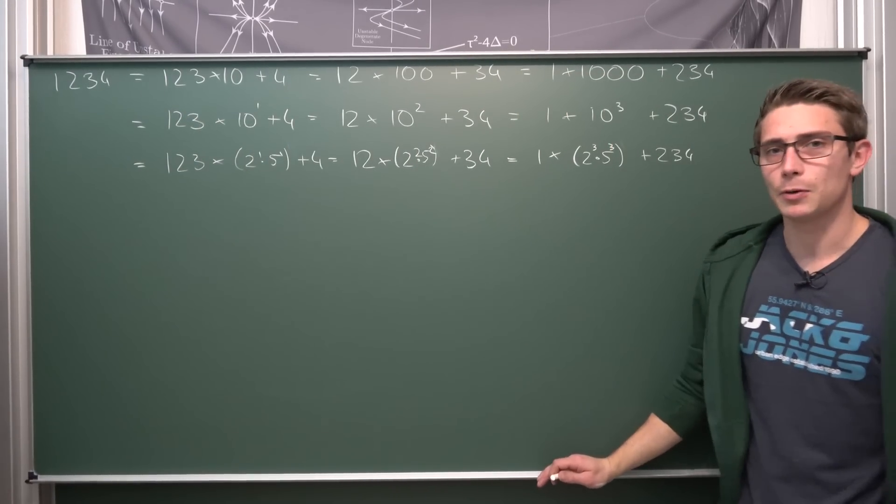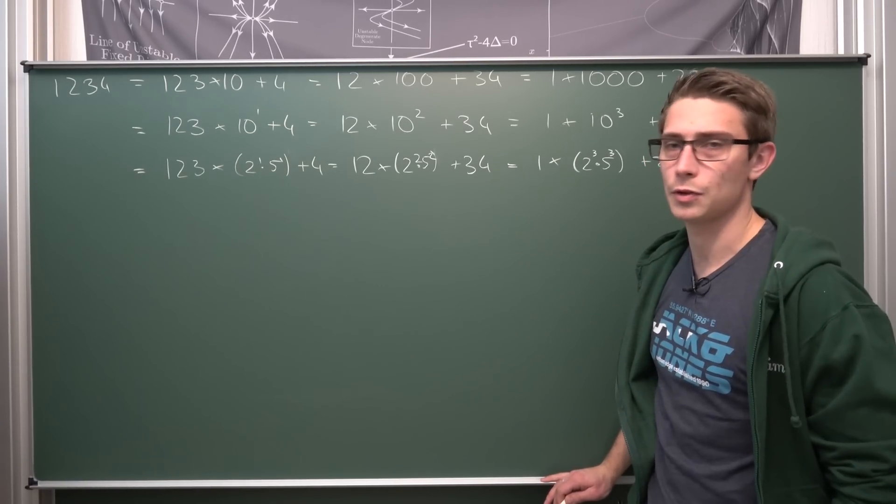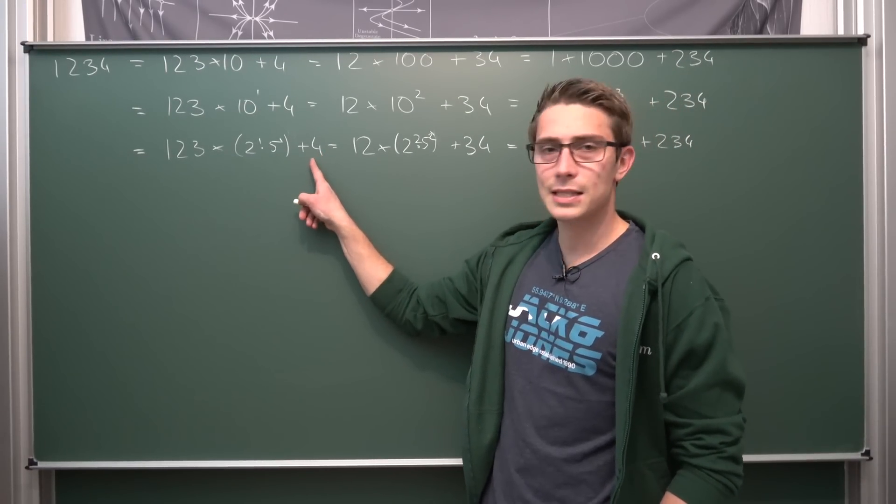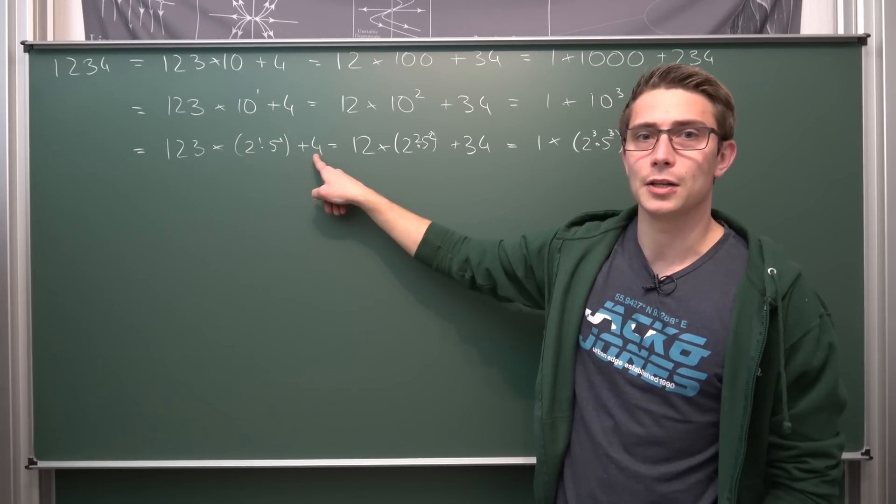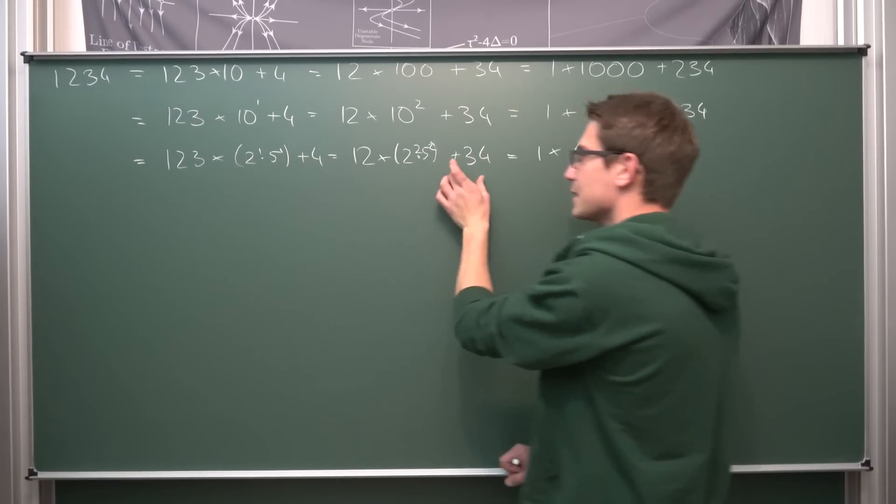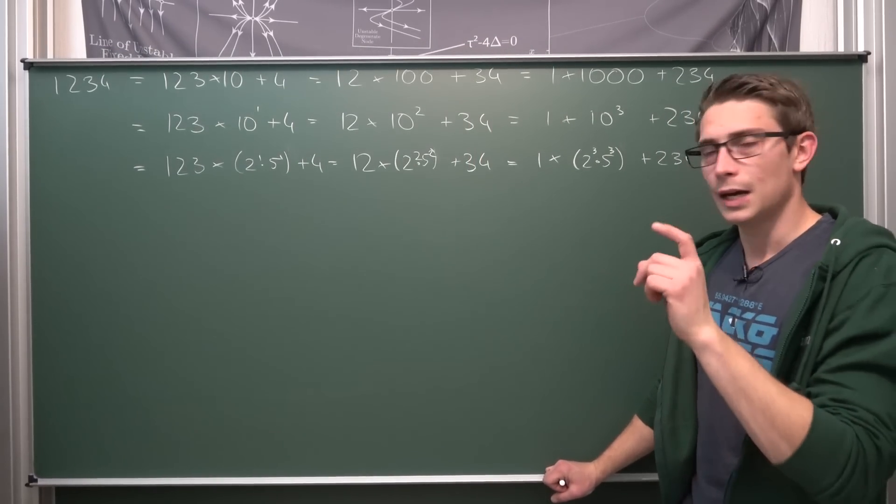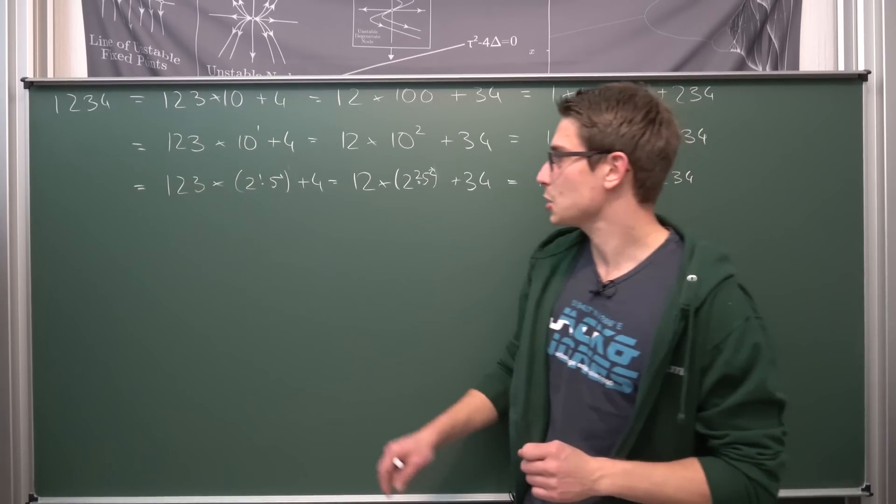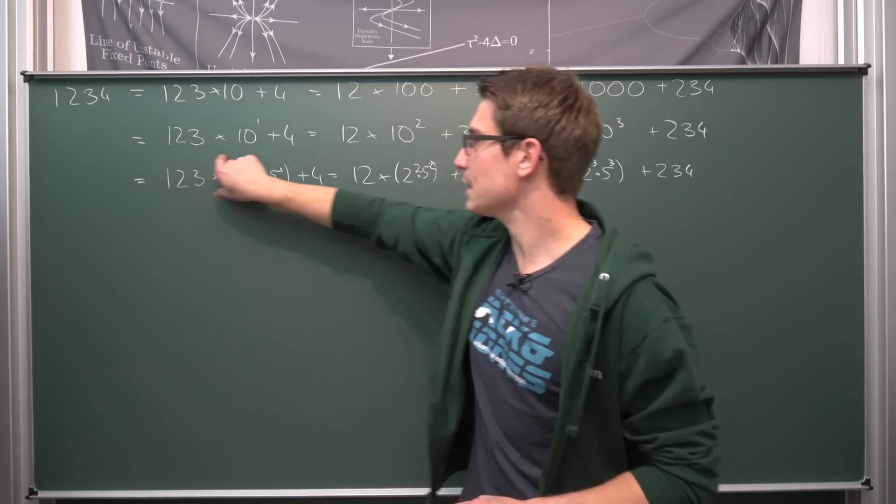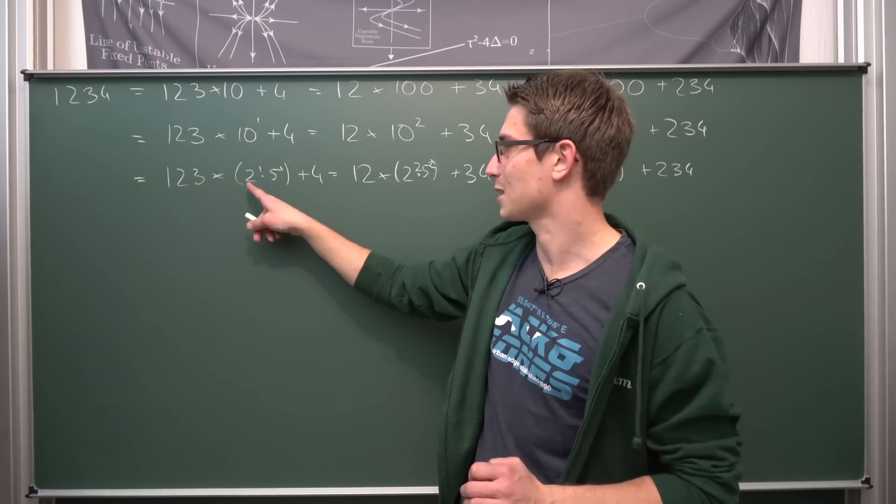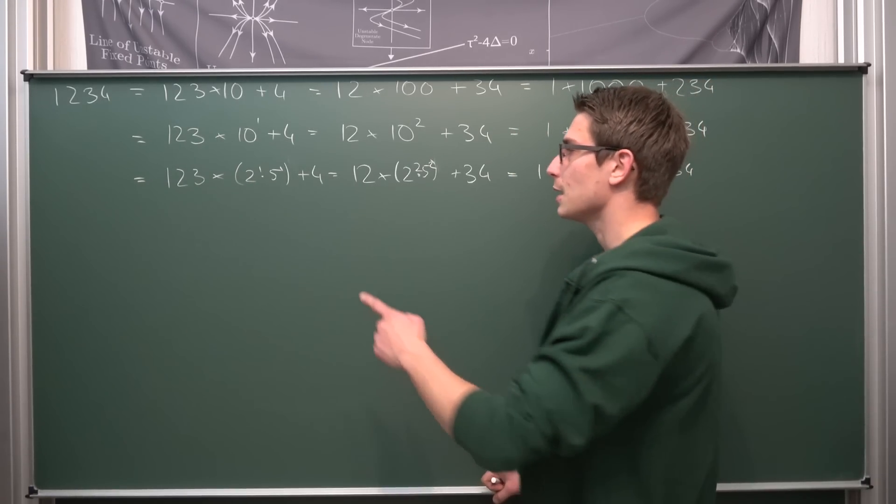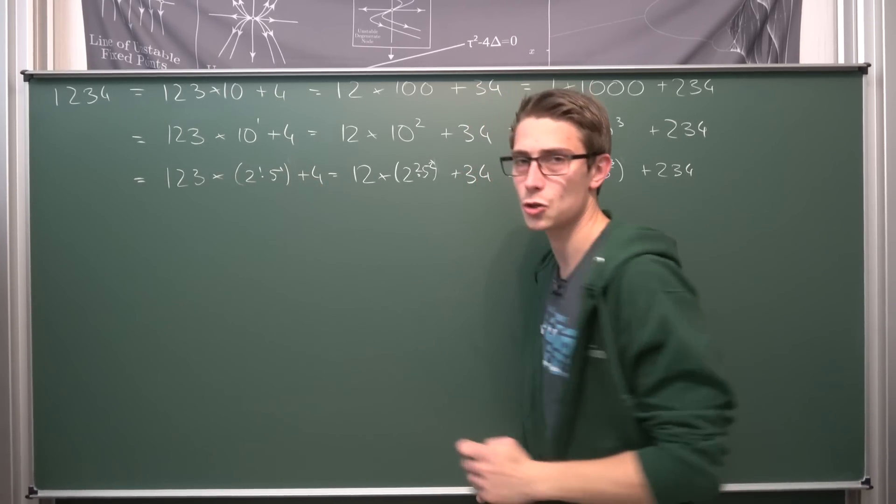Now, what can we say about the divisibility of this number 1234? Obviously our last digit is going to be a number which is divisible by 2, which is 4. Now, the most important part is how our last digits concatenated are going to behave. A number is going to be divisible by 2 if the last digit is divisible by 2. This follows from the fact that this first part is divisible by 2 because it includes a factor of 2 to the first power. All that we need for divisibility by 2 is that the last digit is divisible by 2.